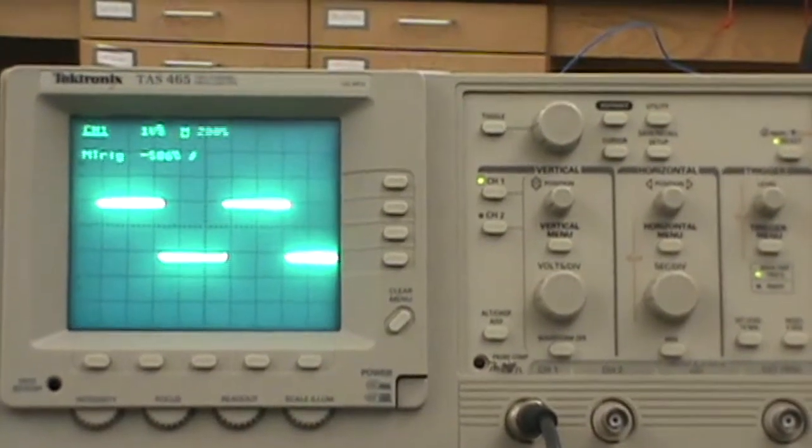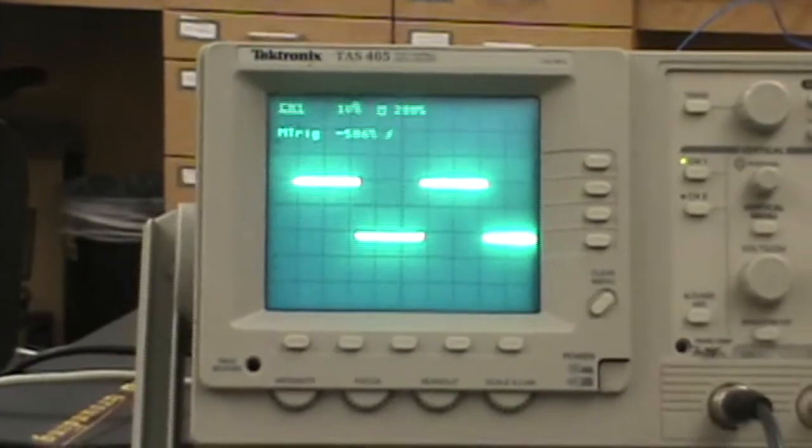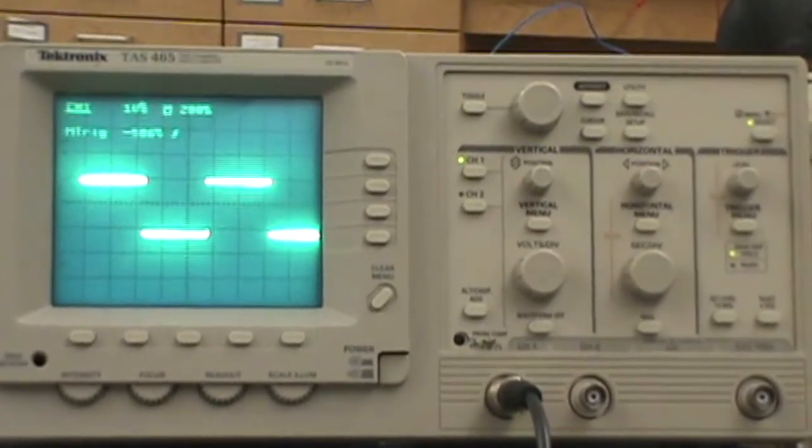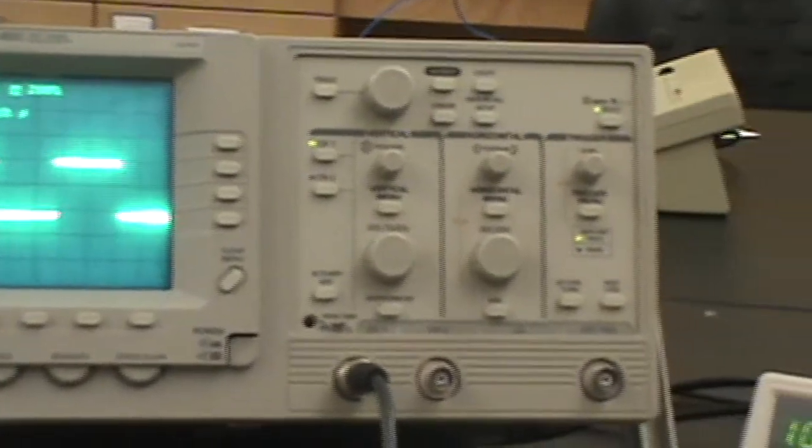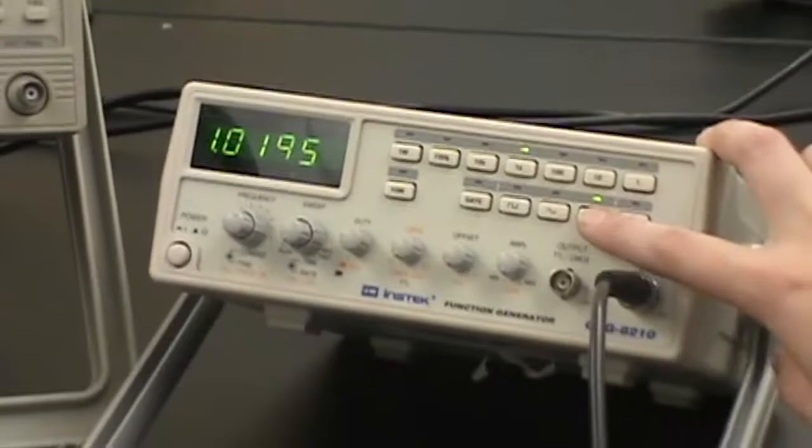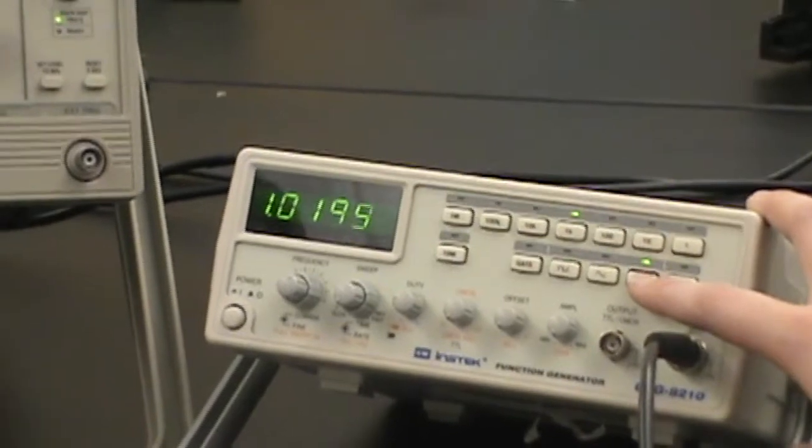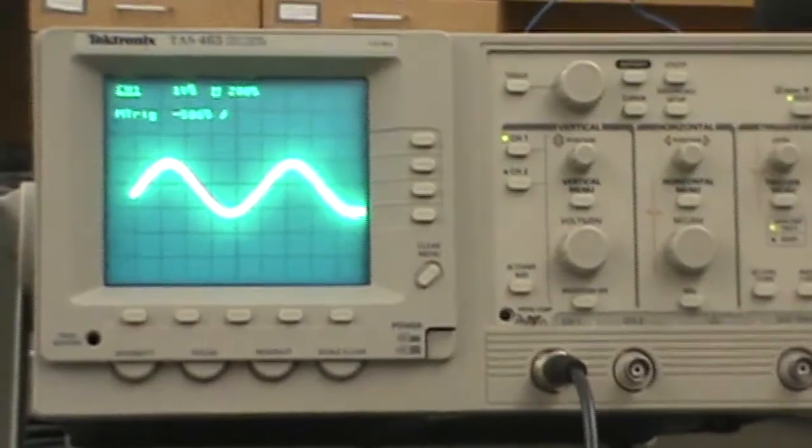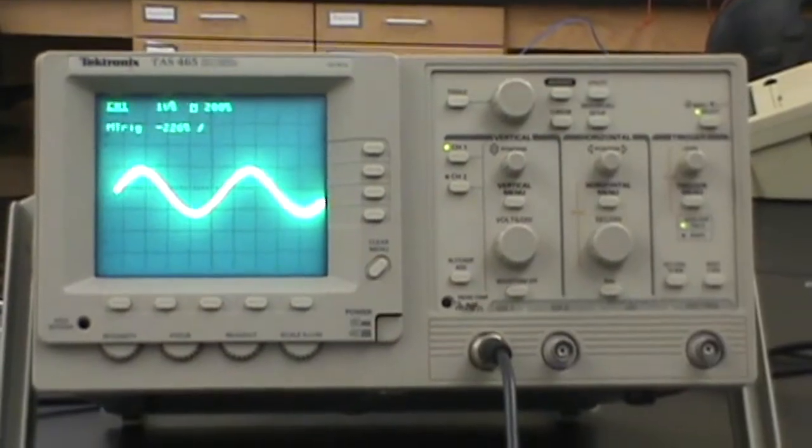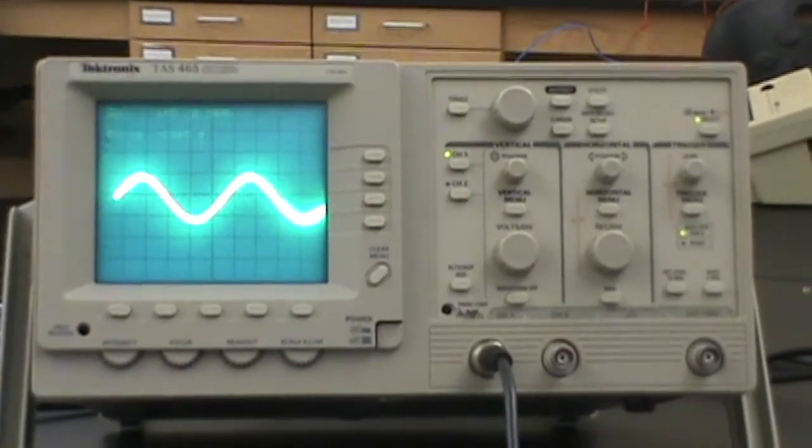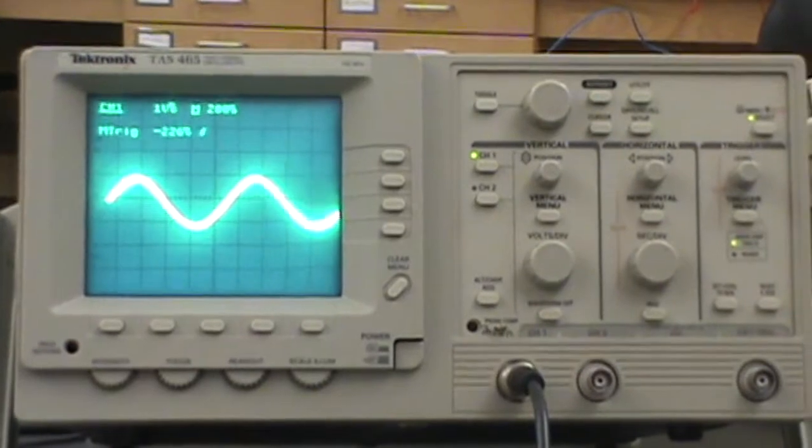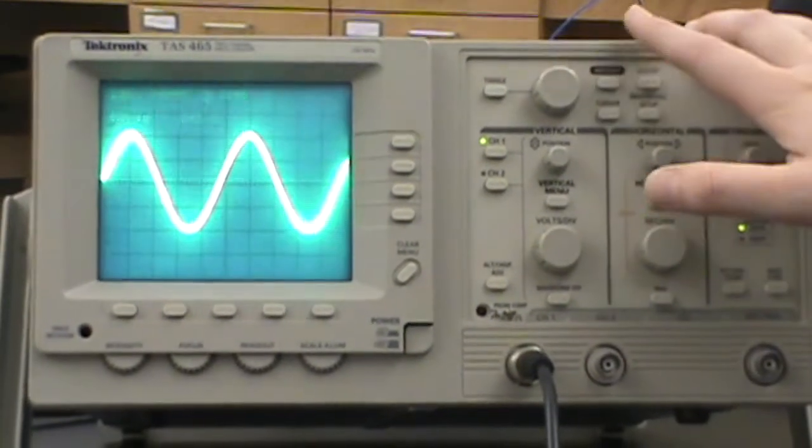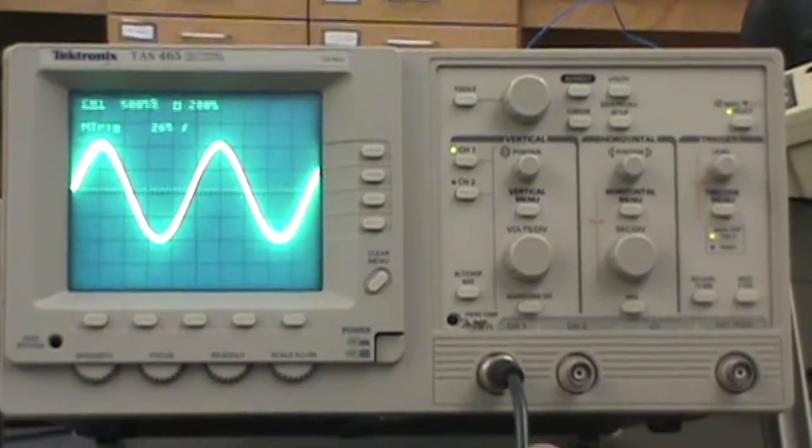If your oscilloscope looks like this, then you need to adjust the waveform by selecting the sinusoidal button on the function generator, which is here. Now your waveform on the oscilloscope should look like a sinusoidal wave that you see. Once your waveform appears, the best way to make sure it's stable is to hit the auto-set button. This automatically sets your waveform on your screen.